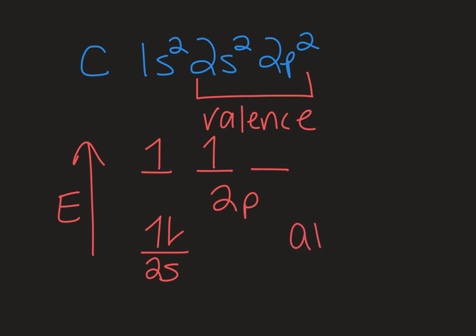These are the atomic orbitals, the valence atomic orbitals of carbon. When we think about bonding, you have two atoms come together to share electrons between them, typically two electrons between them.